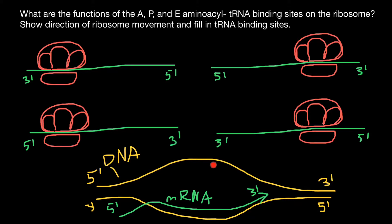The sequence here is going to be the same as the sequence of the messenger RNA, with one exception: here we would have thymine, and instead of thymine in messenger RNA, we are going to have uracil. So now, when we know this information, we can show the directionality of the movement of the ribosome.